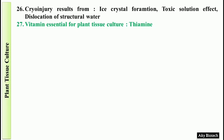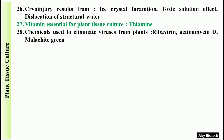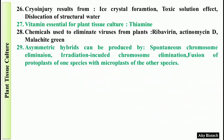Question 28: Chemicals used to eliminate viruses from cells are ribavirin, actinomycin D, and malachite green. Question 29: Asymmetric hybrids can be produced by spontaneous chromosome elimination, irradiation-induced chromosome elimination, and fusion of protoplasts of one species with microplasts of the other species.